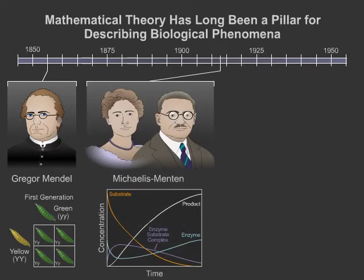In 1913, Michaelis and Menten hypothesized the existence of an enzyme-substrate complex based on observing overall reaction rates and modeling alone, laying down the foundations for biochemistry as we know it. Interestingly, their results were accepted as fact for 30 years before the enzyme-substrate complex was actually characterized.